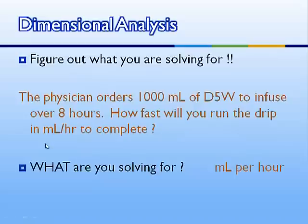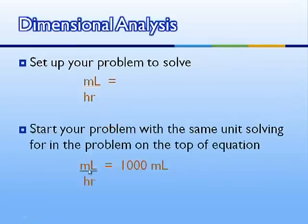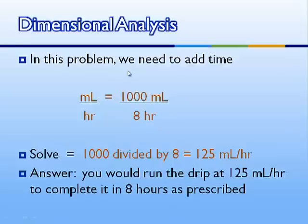So where in our problem did we see milliliters? We've got 1,000 milliliters over eight hours. We want to start with whatever's on top that we're solving for, so we start with our 1,000 milliliters. Then we're looking for time underneath — eight hours. So 1,000 milliliters divided by eight hours gives us our milliliters per hour. When we do the math, 1,000 divided by eight, we get 125. So we would run the drip at 125 milliliters per hour to complete it in eight hours as prescribed.